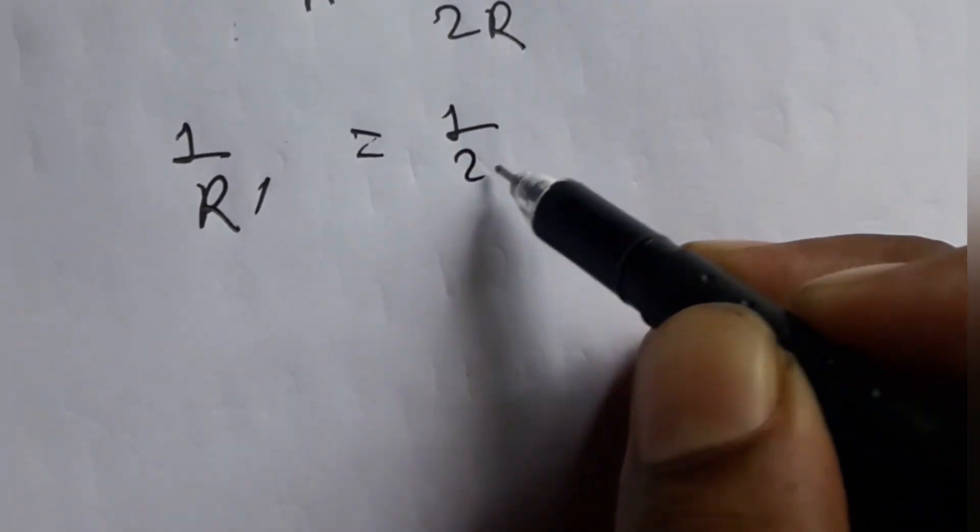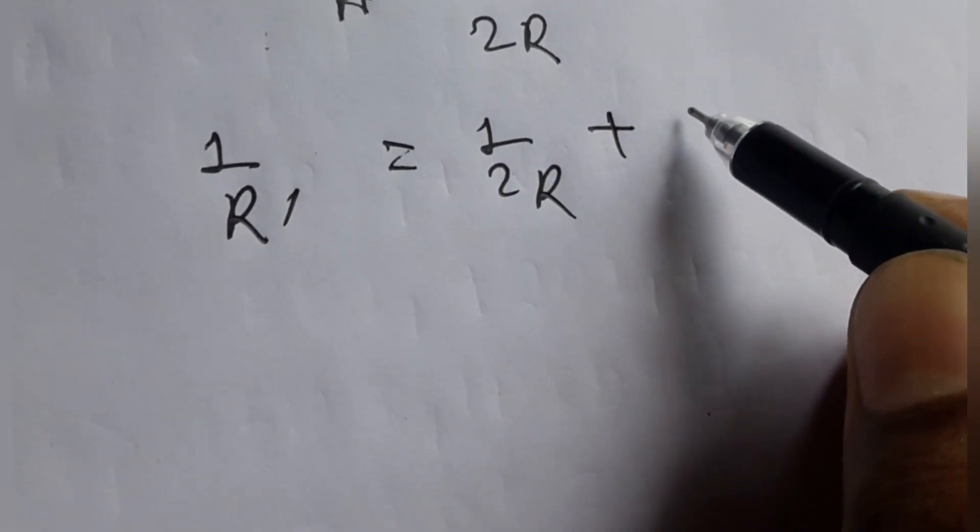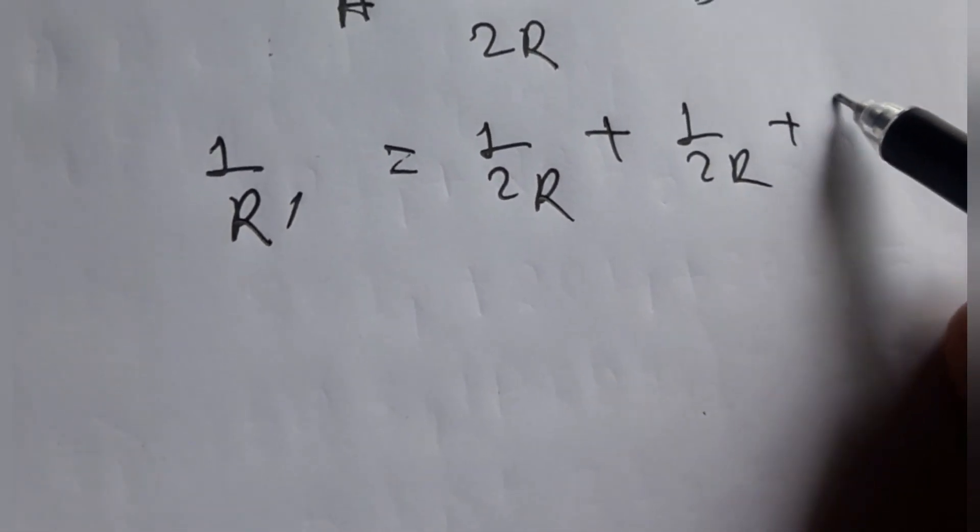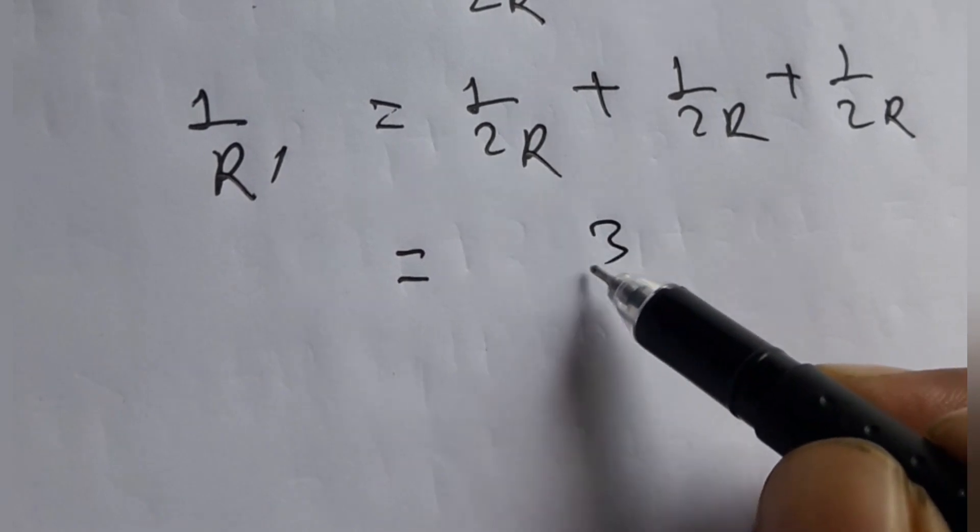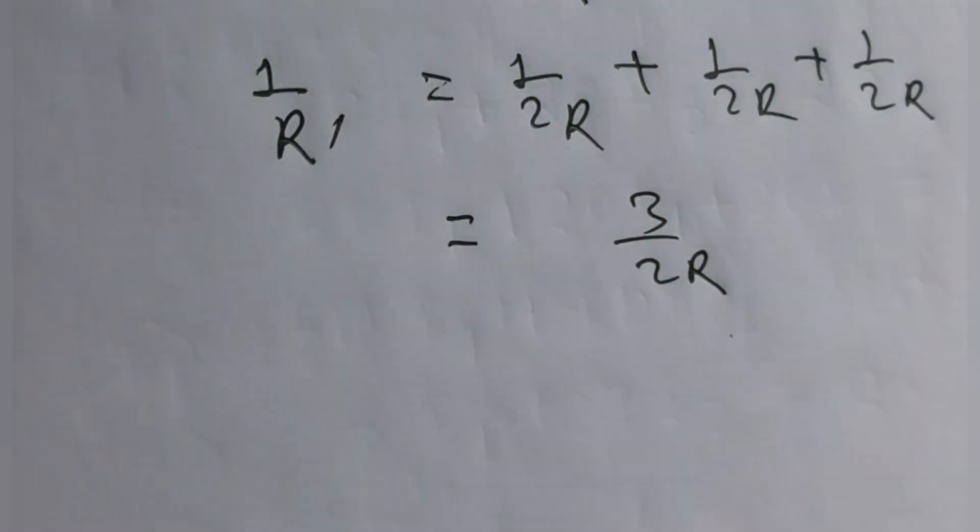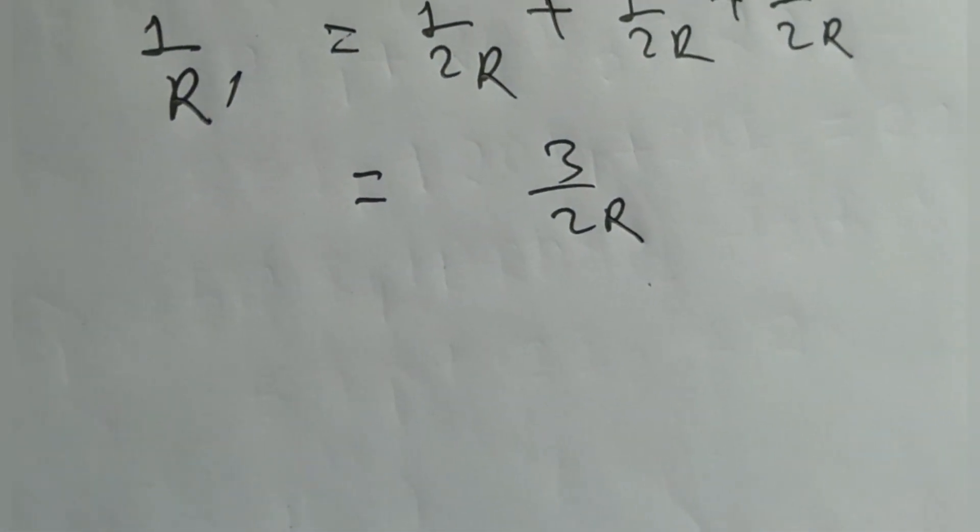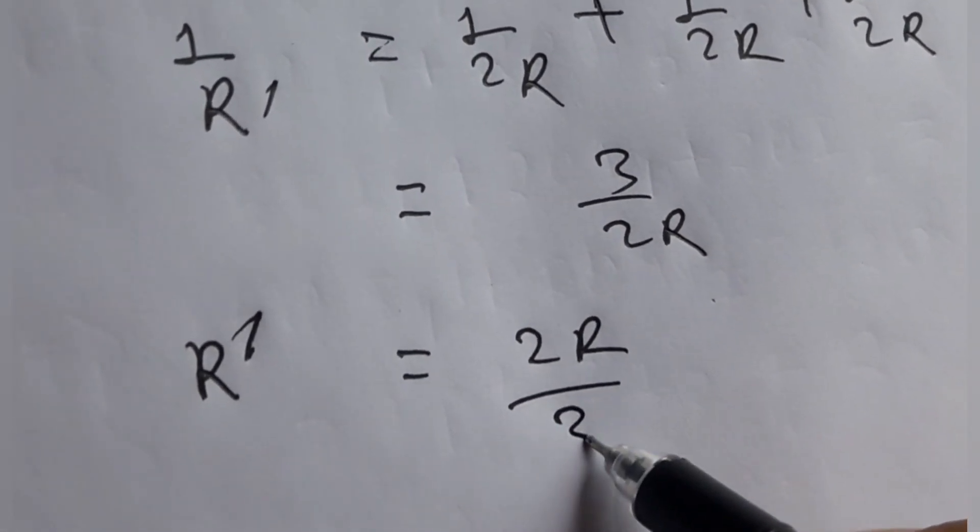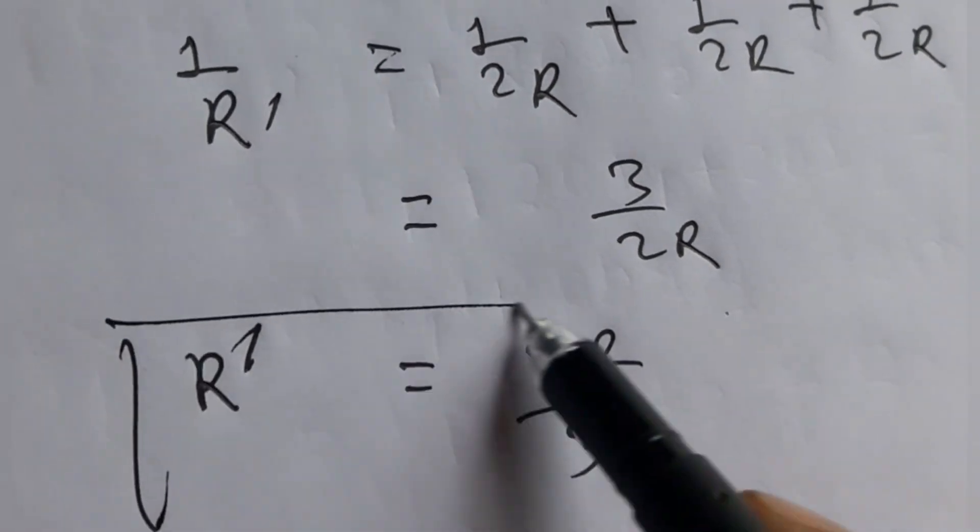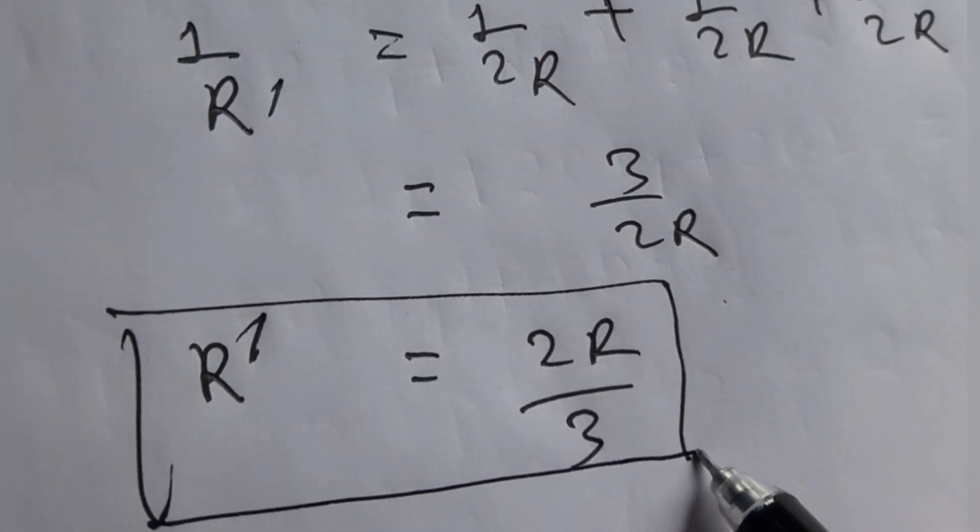equal to 3 by 2R. Therefore we get the equivalent resistance R' equal to 2R by 3. This is the required result.